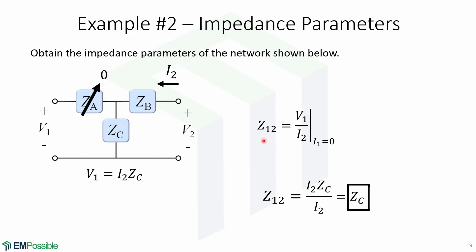Now we will find Z12, which is equal to V1 over I2 when I1 equals 0. This means that port 1 is open and no current flows through ZA. We find voltage V1 in terms of I2, ZB, and ZZ. V1 is equal to the current I2 times the impedance ZZ. Substituting this into the expression, we obtain that Z12 equals ZZ.